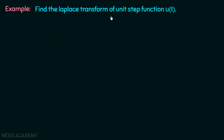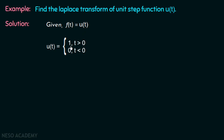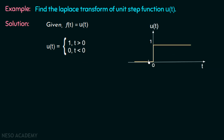Find the Laplace transform of the unit step function u(t). We are given f(t) equal to u(t) and we need to find its Laplace domain. From the definition of the unit step function, u(t) equals 1 when t is greater than 0 and equals 0 when t is less than 0. We can also plot this graphically: on the right half plane the function value is 1, and on the left half plane the value is 0.